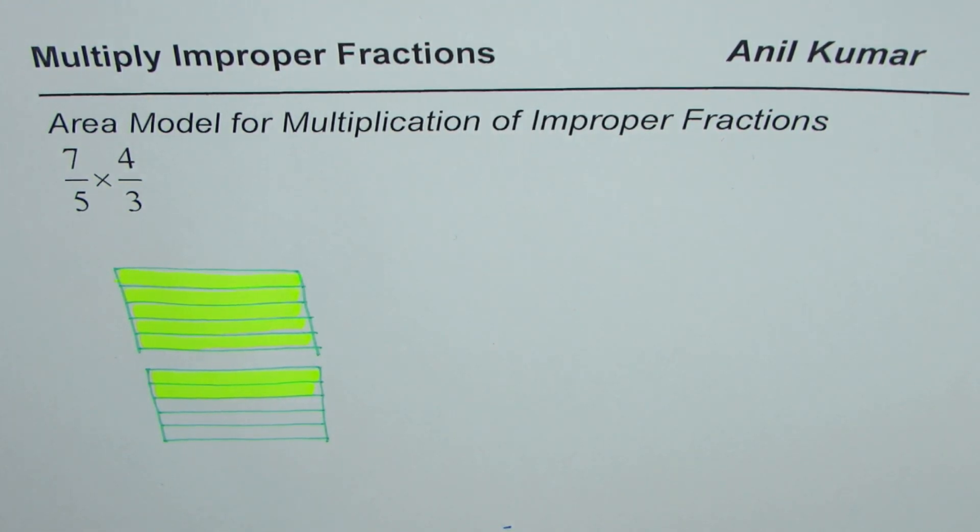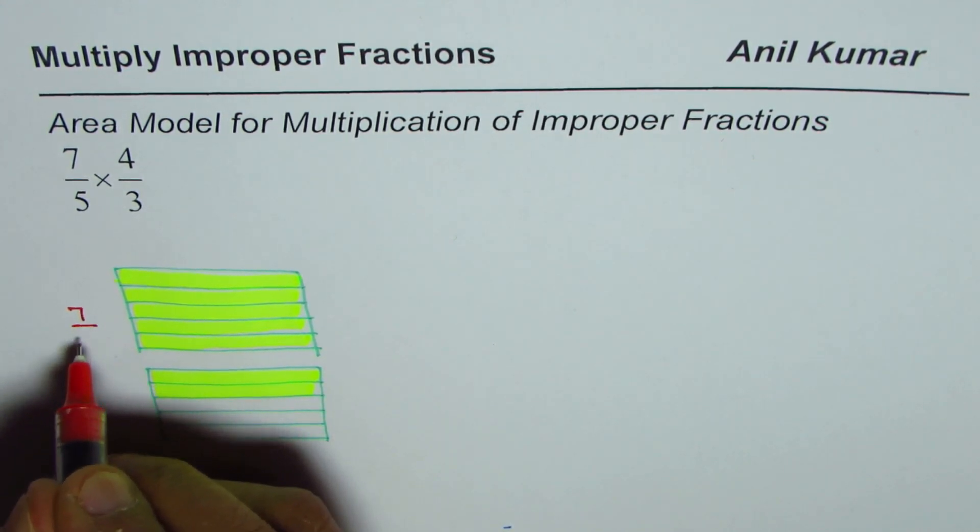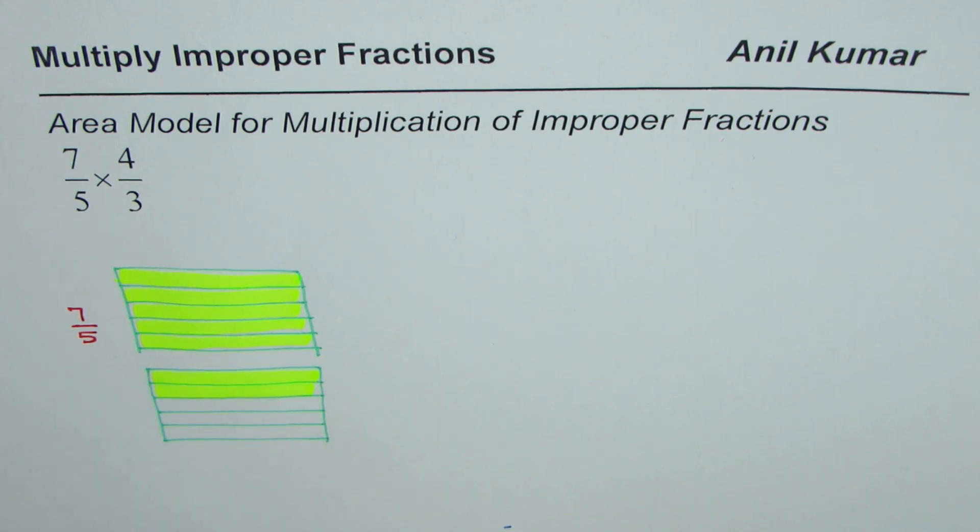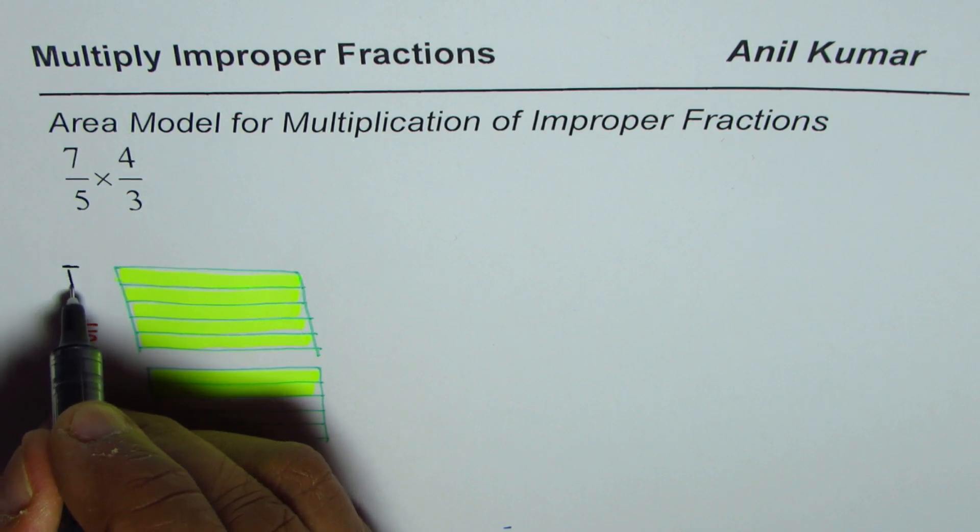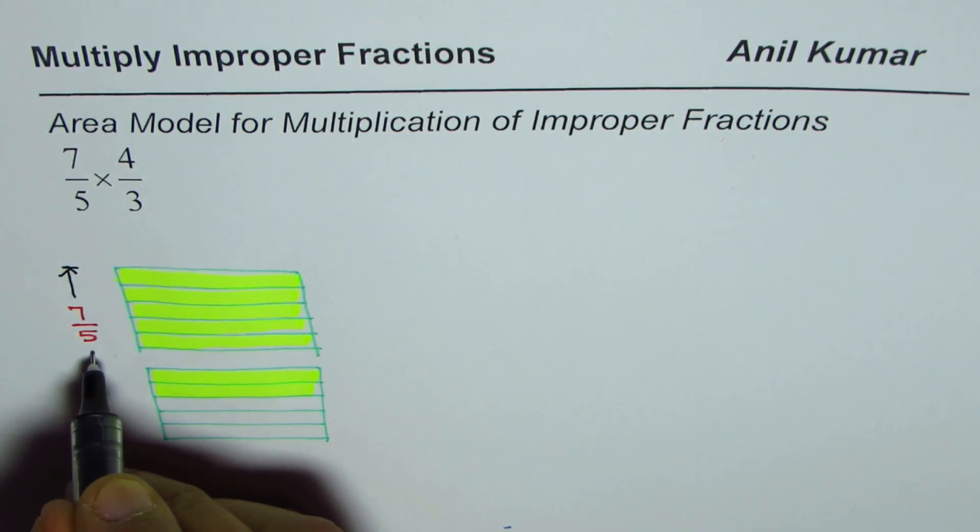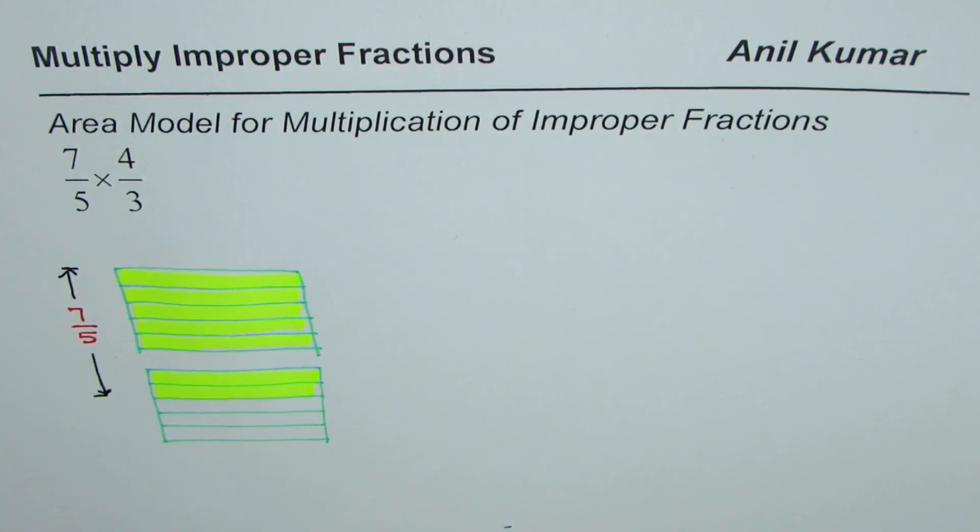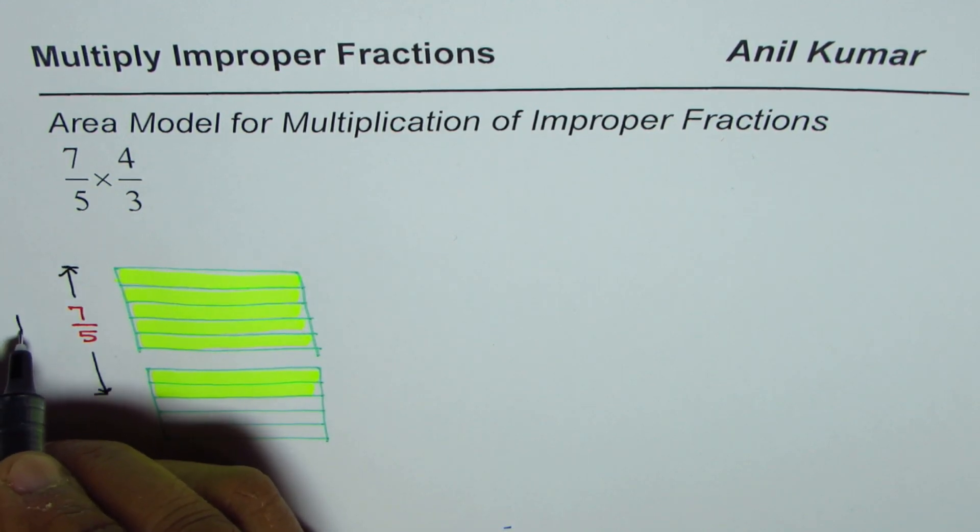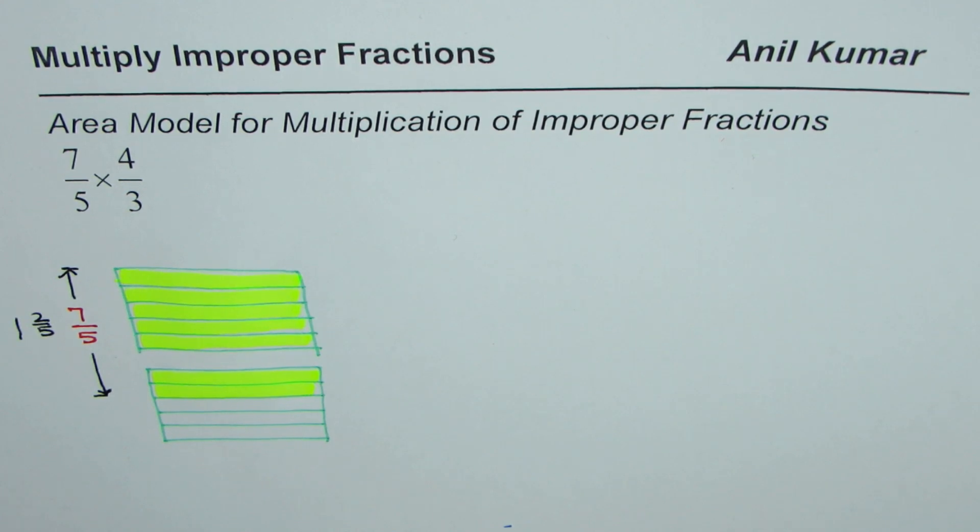So we could write this as, now we have selected 7. So it is 7 out of 5. So that is what it means. This part, from here to here, represents 7 out of 5. It is indeed improper fraction. 7 out of 5 also means 1 whole, and when you divide this, you get 2 out of 5. So 1 whole and 2 out of 5. I hope it makes sense.